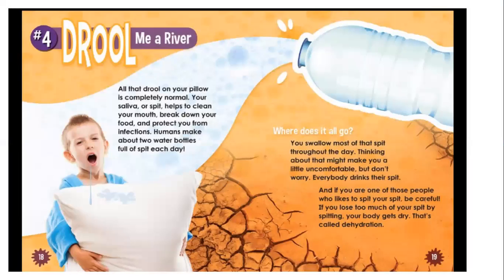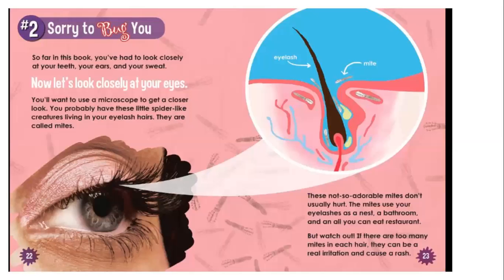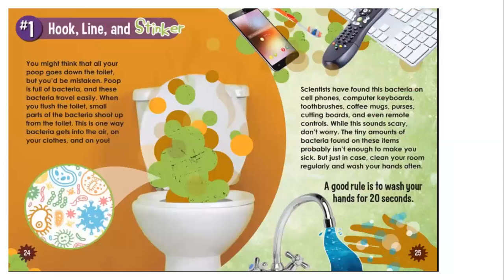The sections include number four, Drool Me a River; number three, Warm and Fuzzy; number two, Sorry to Bug You; and number one, Hook, Line, and Stinker.